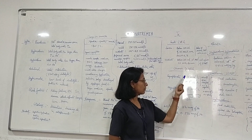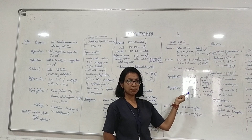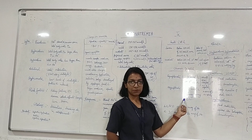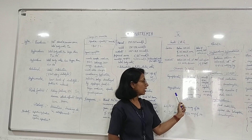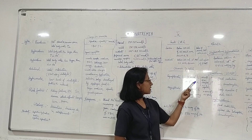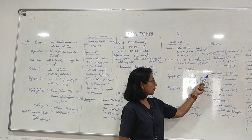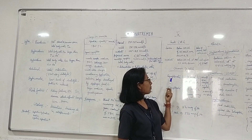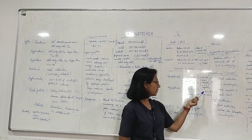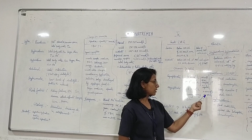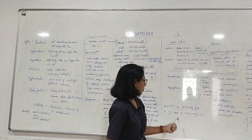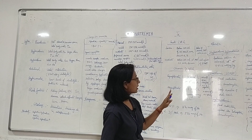For asymptomatic chronic hyponatremia, according to the European guideline, go with 8 millimole per litre every 24 hours with continuous sodium monitoring. According to the American guideline, for asymptomatic chronic hyponatremia, give 10 to 12 millimole per litre in 48 hours.